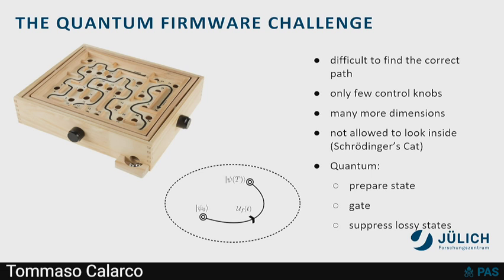If you take that hand we see in the logo of our workshop and try to use it to manipulate some classical objects, like in this game, you have some goal, you want to go through some path, and you have some external parameters you can manipulate — only a few control parameters. In the quantum domain, you have difficulties: you cannot look inside, otherwise you will collapse the wave function. There are many things you want to do — not only going from one state to another, but also preparing unitary transformations and gates.